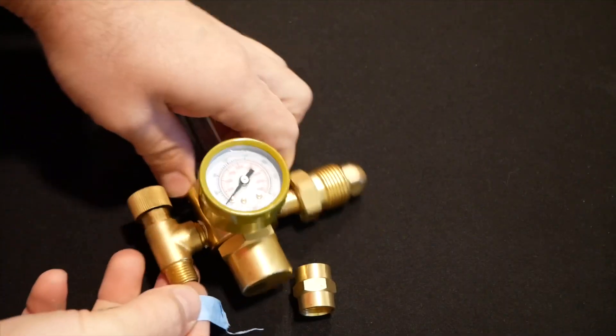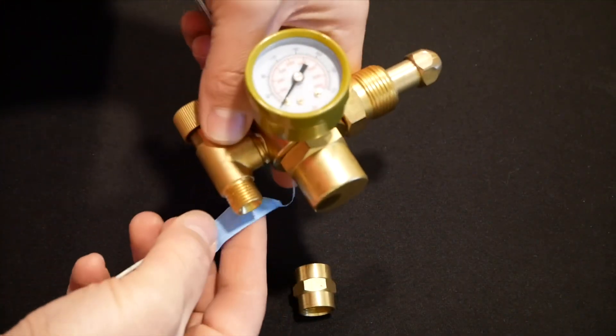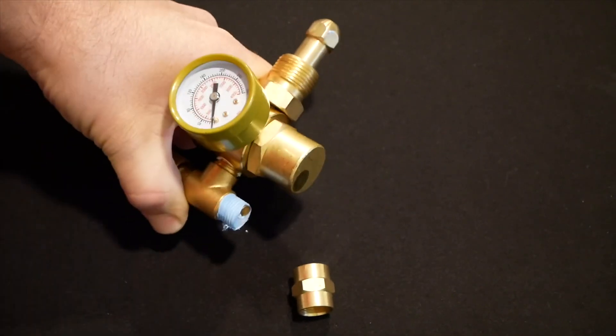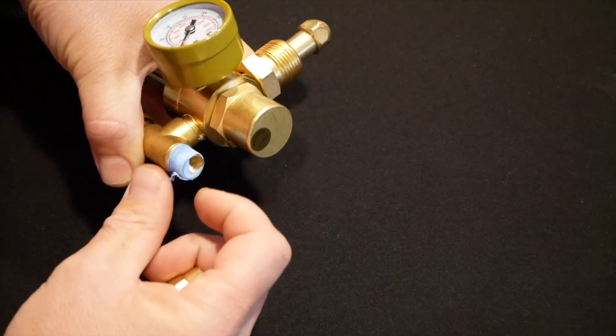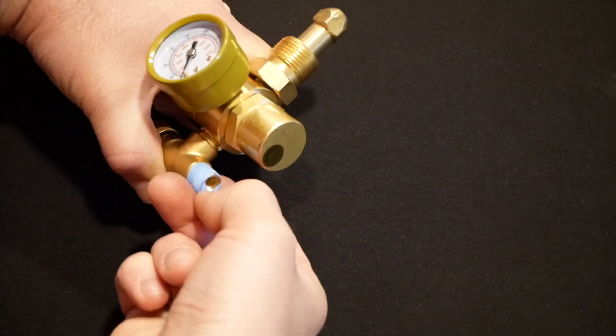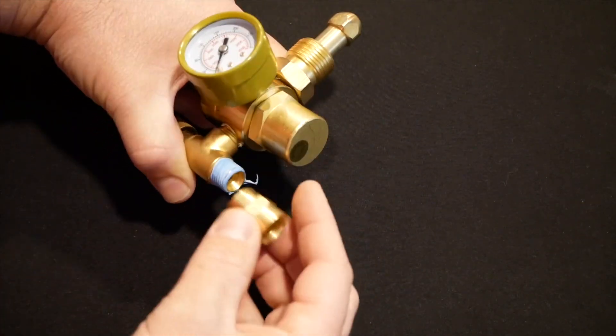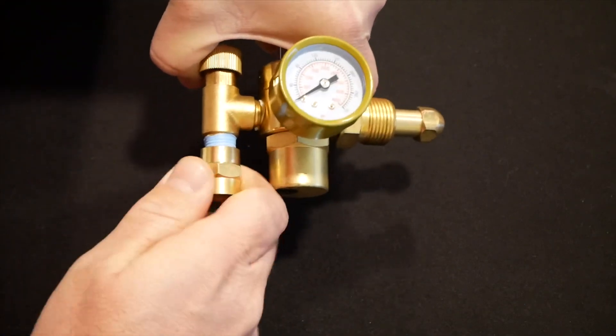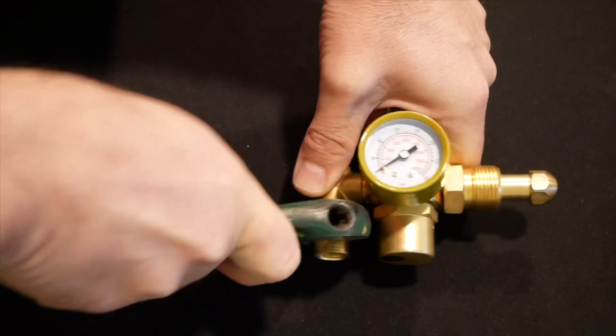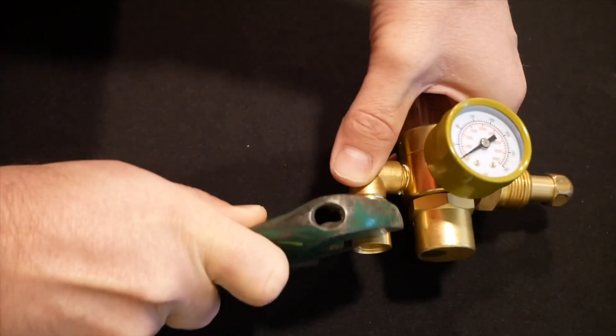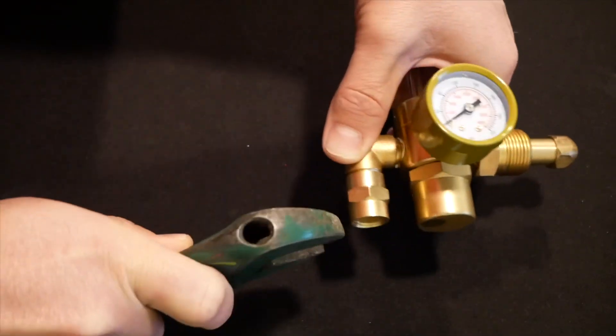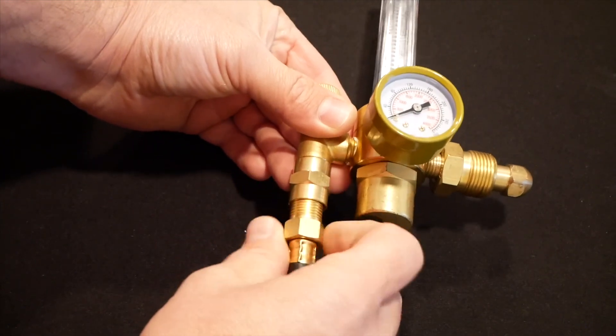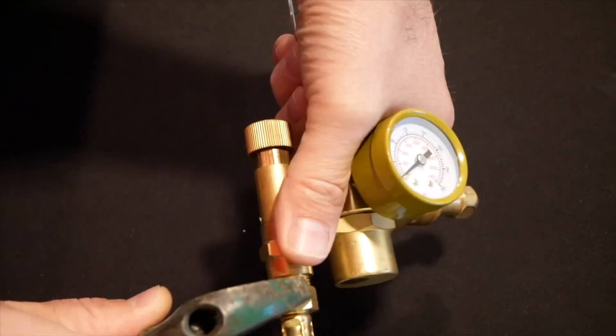Next we need to install some Teflon tape on the threads on our flow meter. This will ensure that the coupler we're going to install seals correctly. Be sure that none of the Teflon tape covers the orifice, otherwise a piece of material could fly through the gas line and get clogged in the solenoid valve. Install the coupler and tighten it down with a wrench. When installing the gas hose into the bottom of the coupler, you won't need any Teflon tape. This is a ball and socket design, and you can simply tighten it down with a wrench.